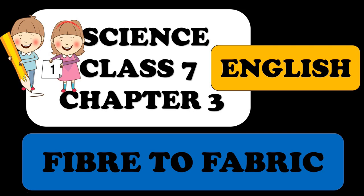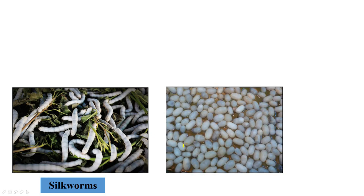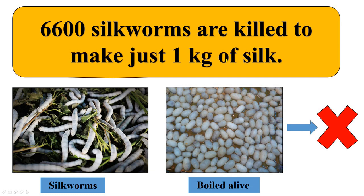Before starting our chapter, let me ask you a question. All of us know that we get silk fabric from silkworms. But do you also know that these silkworms are boiled alive to obtain silk fabric? Yes, you heard that right. In fact, just to make 1 kg of silk, 6600 silkworms are killed. It is true, but sad.